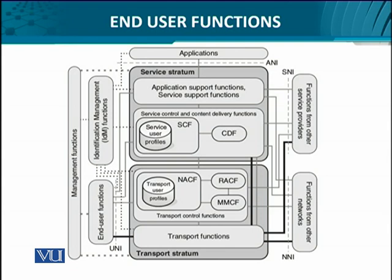Let's look at the end user functions which are shown to you on the left hand side at the bottom. Here we can see that it has various kinds of interfaces. The strongest interface that it has is via a user-to-network interface with the transport stratum. At the same time, it has interfaces directly with the transport control functions, with the service control and content delivery functions, and it also has interaction with the application support functions.